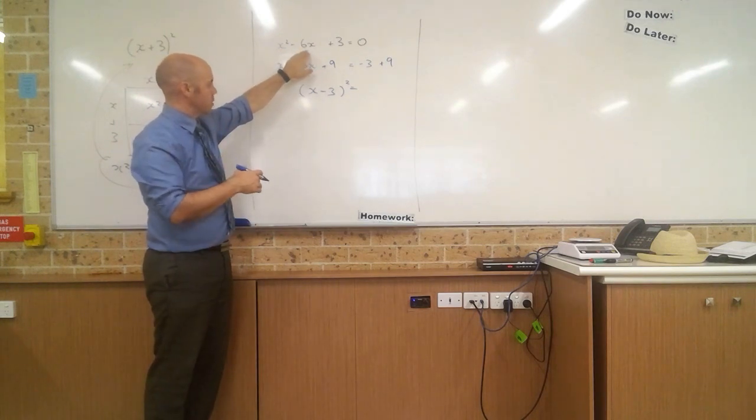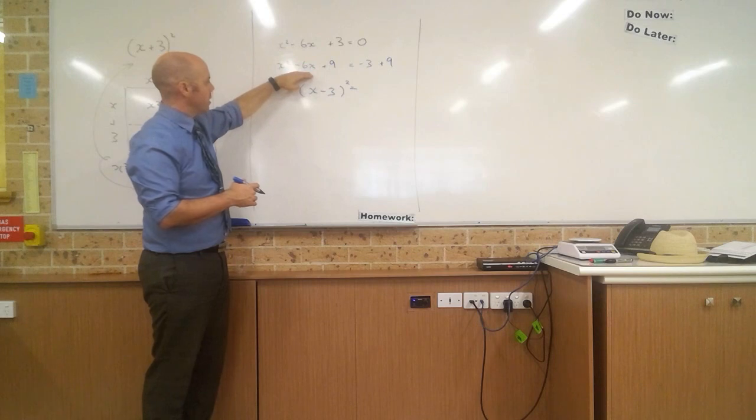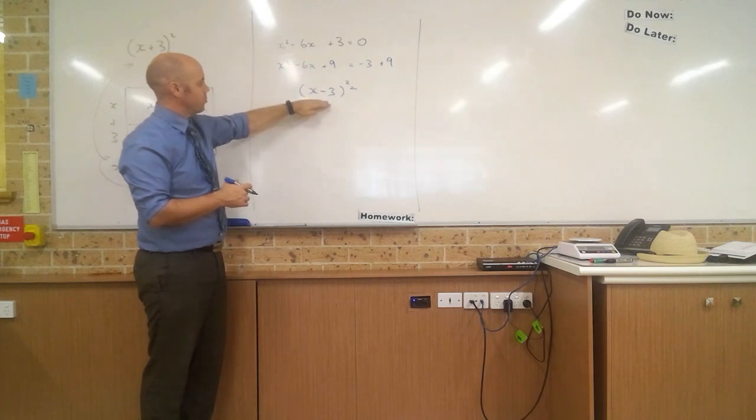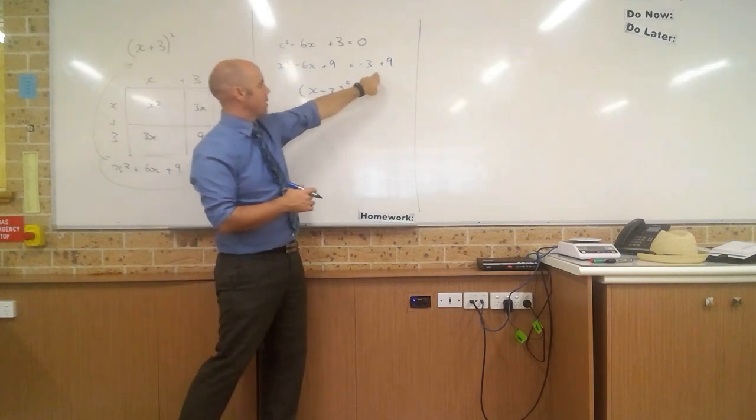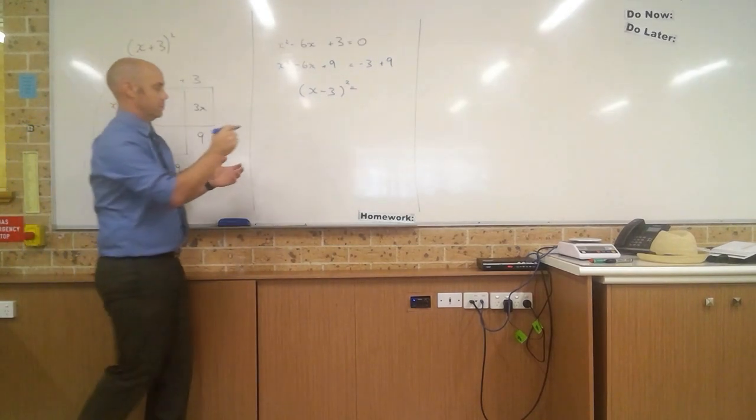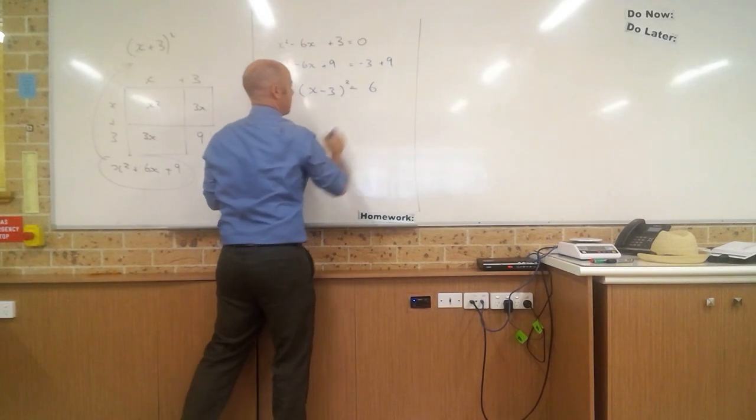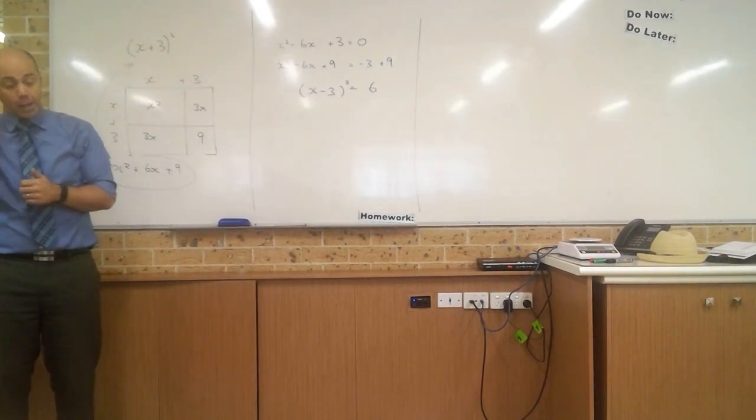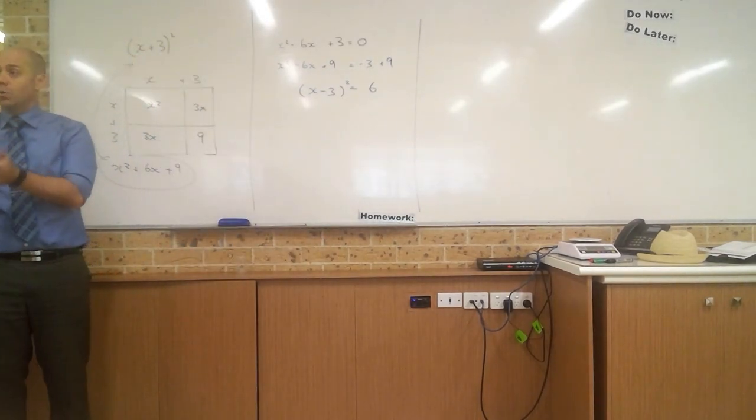Just to kind of take a step back and make sure we know where we've gone. We've started with an expression. We've manipulated it in such a way to be able to factorize it to a perfect square. Now, what have we ended up on this side though? Minus 3 plus 9. Ezra? 6. Okay. So now I've got an expression, x minus 3 all squared equals 6.